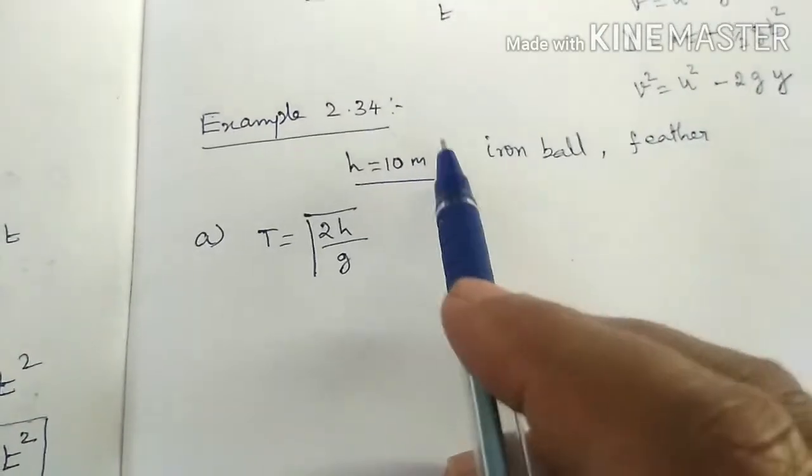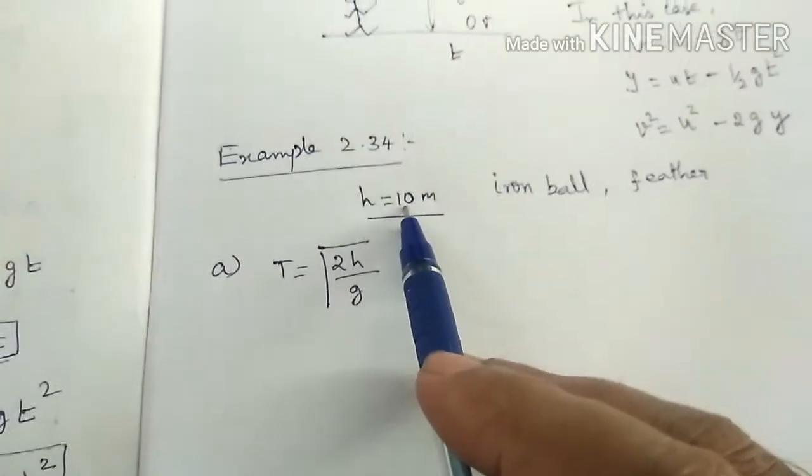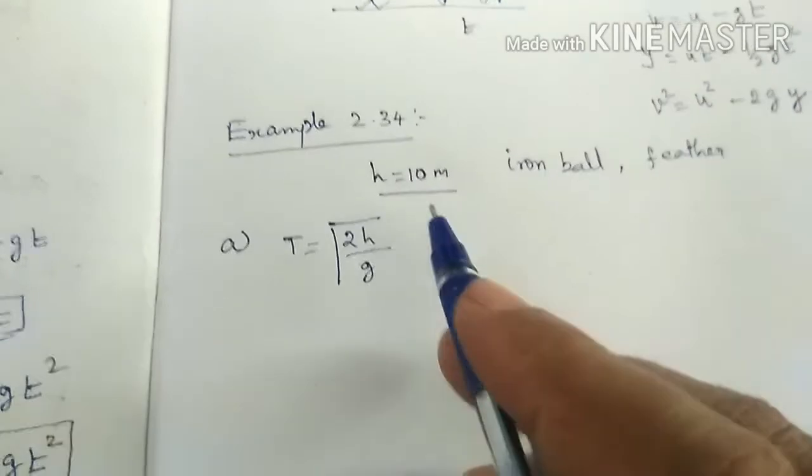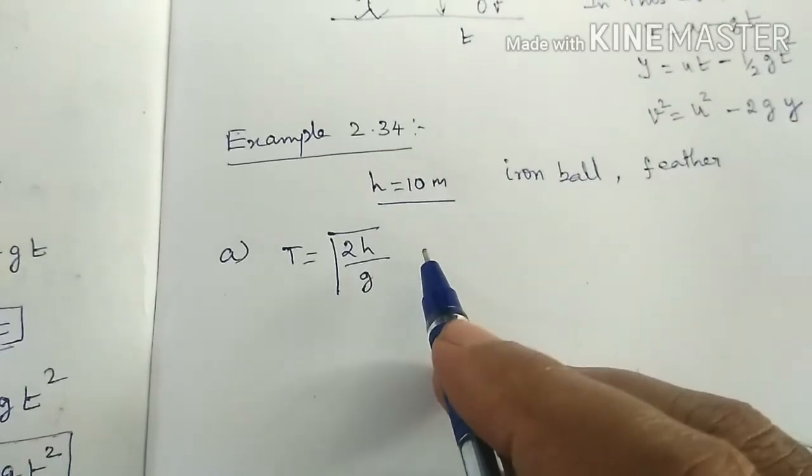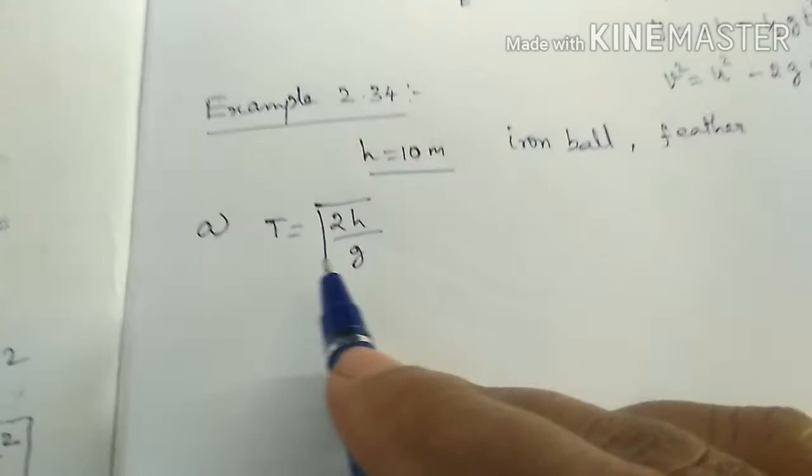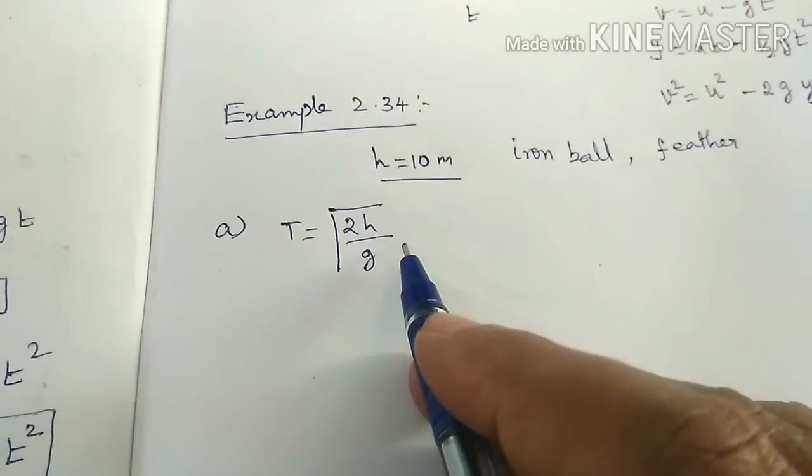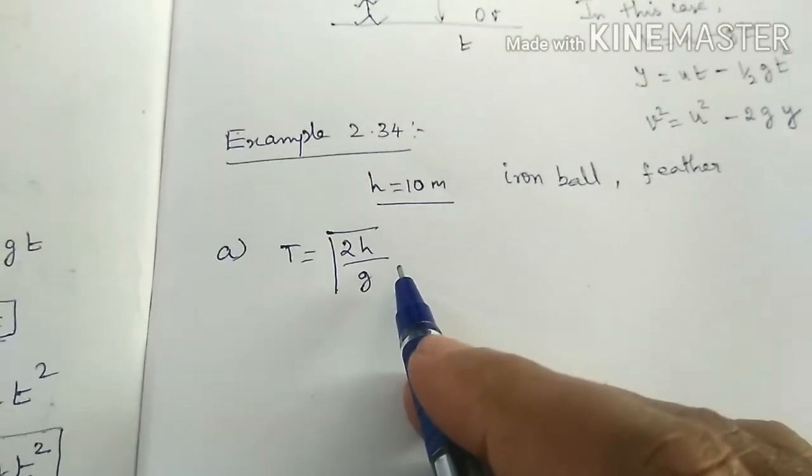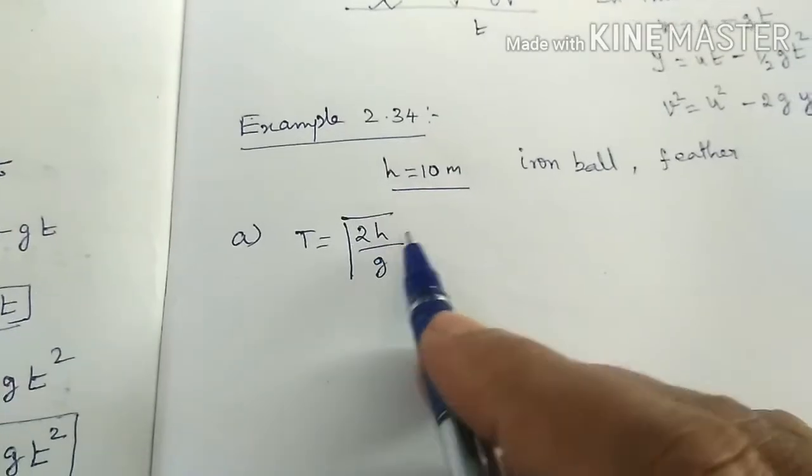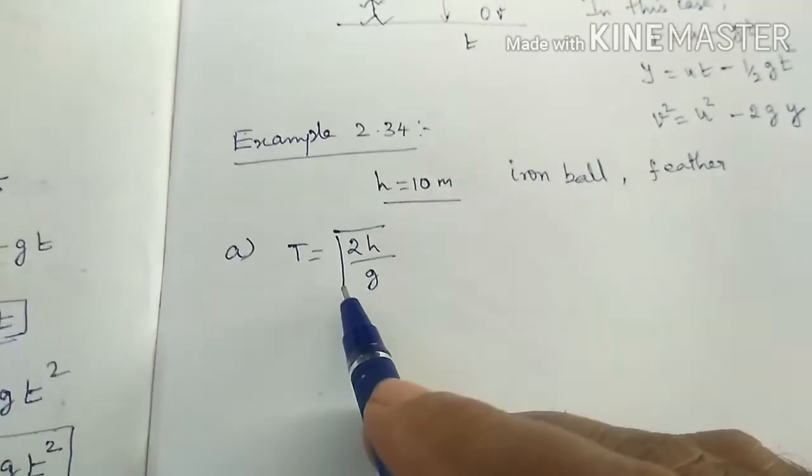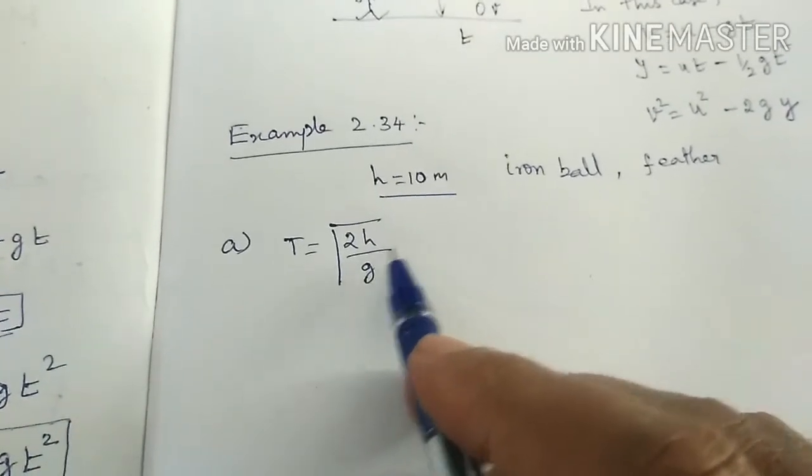Iron ball and feather both fall from the height 10 meter. Time taken by these two things to reach the ground, this is the equation we derived from kinematics. Here there is no involvement of the term mass.